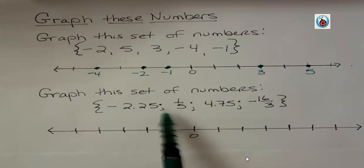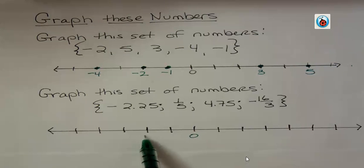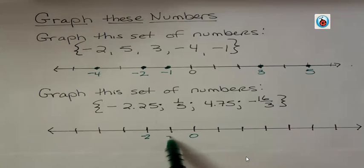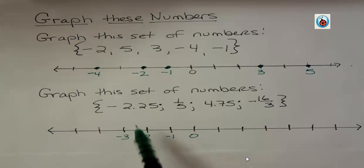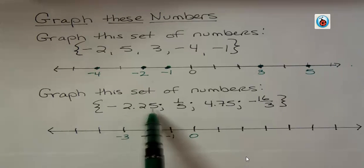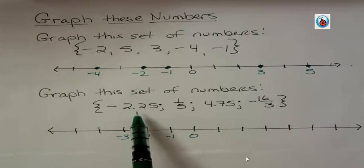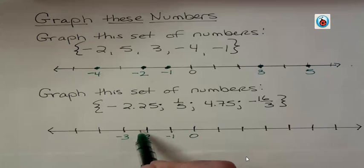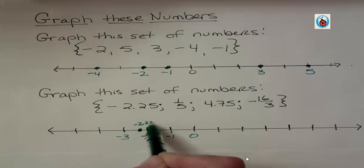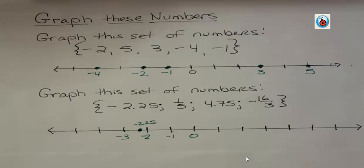Negative 2.25. Let's say that this is negative two, this is negative one, this is negative three. So where would negative 2.25 go? We know it's around negative two. Is it just to the right of it or just to the left of it? Well, 2.25 absolute-value-wise is a little greater than two, so it's further away from zero. So negative 2.25 could be right here — that's about a quarter away. It's not exact, but we know it's pretty close.